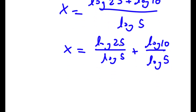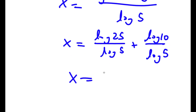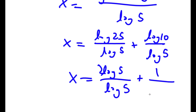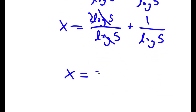And log 25 is log of 5 squared, and I can move the exponent 2 to the front, so this is the same thing as 2 log 5 over log 5 plus log 10 over log 5, which equals 1. So these two cancel out, and now I get x is equal to 2 plus 1 over log 5.